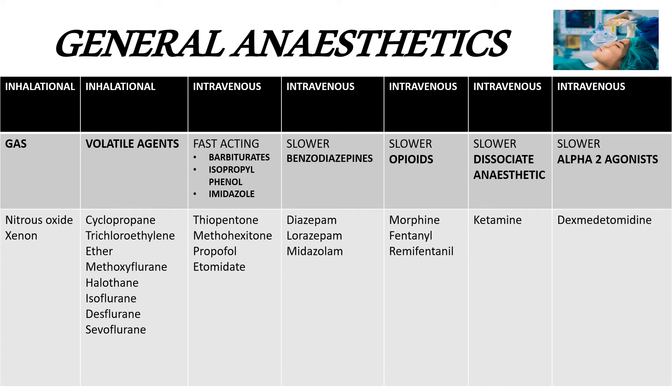The next group of intravenous general anesthetic agents is the benzodiazepines — examples are diazepam, lorazepam, and midazolam. They are the slower intravenous anesthetic agents. An important pointer: all the drugs mentioned so far — gases, volatile agents, fast-acting intravenous agents, and benzodiazepines — all have their mechanism of action at the GABA-A receptor.